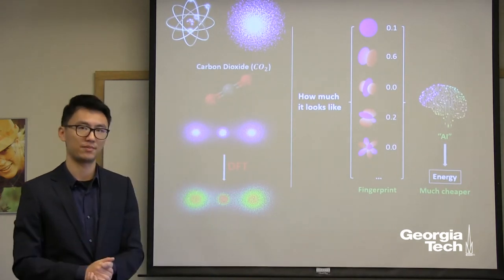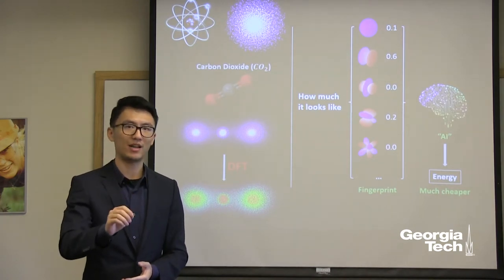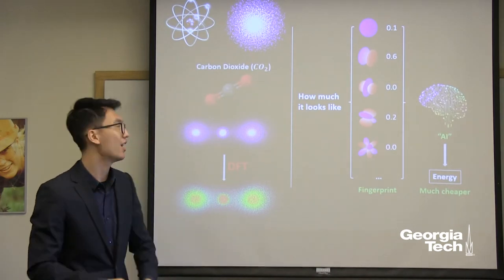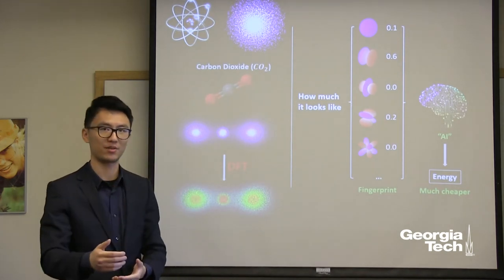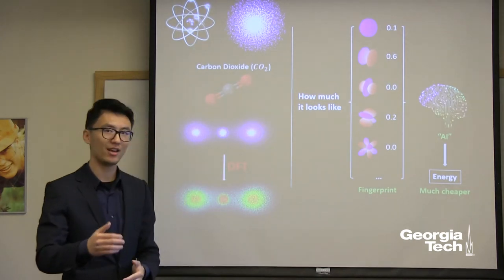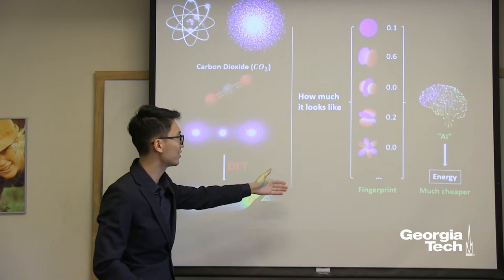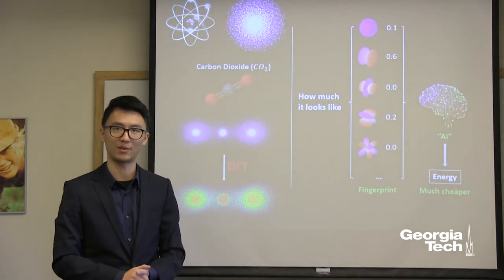So how to make it better? My answer is fingerprinting the electron environment. So now for every spot, I just look around its neighbors and ask, how much does it look like this sphere? I evaluate it and give it a number. Then how much does it look like this? I again evaluate it and give it a number. After going through the whole sequence, I get a sequence of numbers that is the fingerprint of this electron environment.